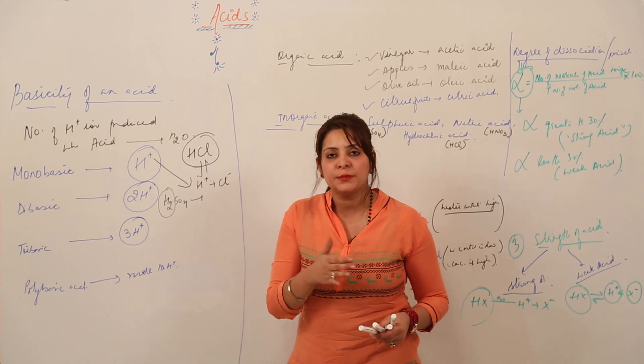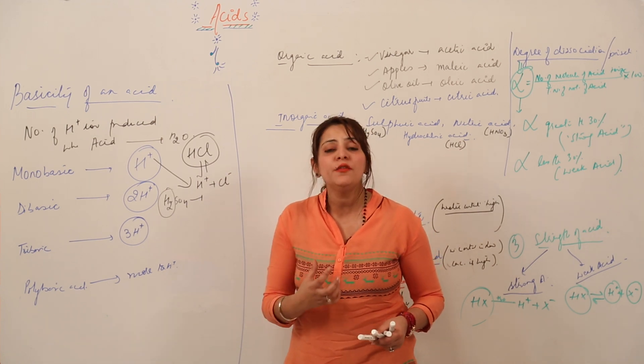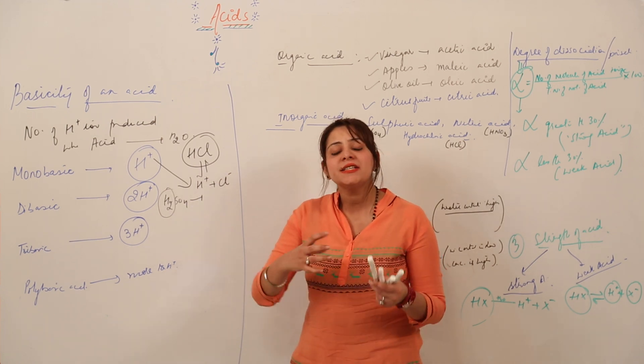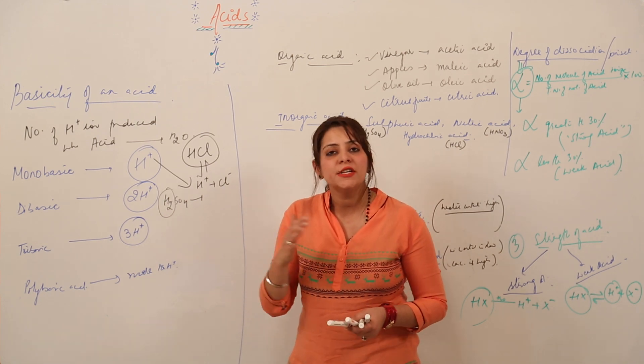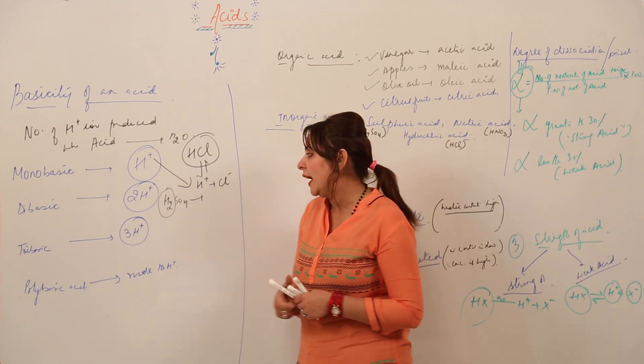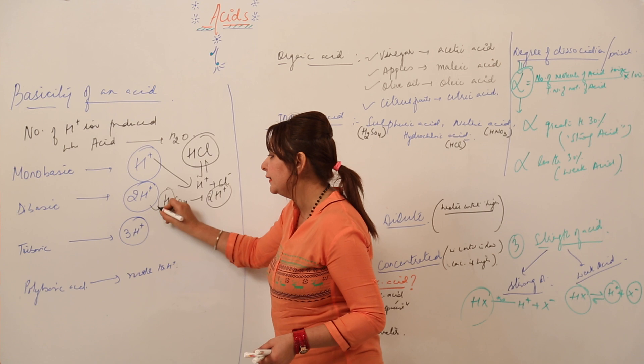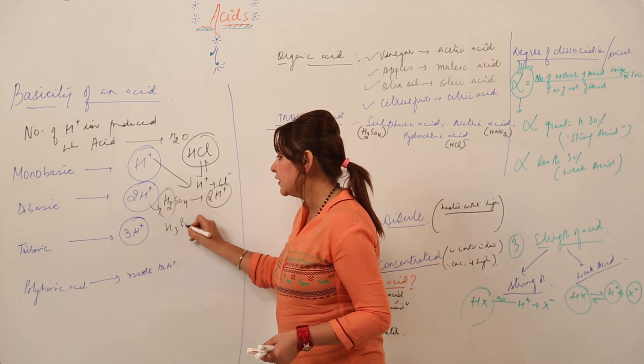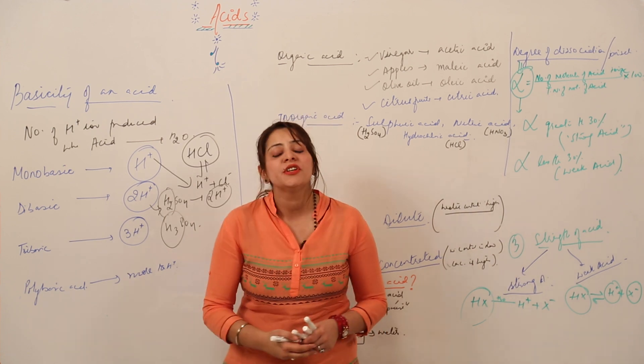If the acid contains two or more H+ ions, it does not split to give all H+ ions in one go, it does it step by step. But the actual number of H+ ions, the ability of an acid to give H+ ions, is indicated by its basicity, whether it gives in one go or in different steps. As it contains two H+ ions, it will be giving two hydrogen ions, so it is regarded as dibasic. Similarly, this phosphoric acid is tribasic, and more than three we have polybasic acid.